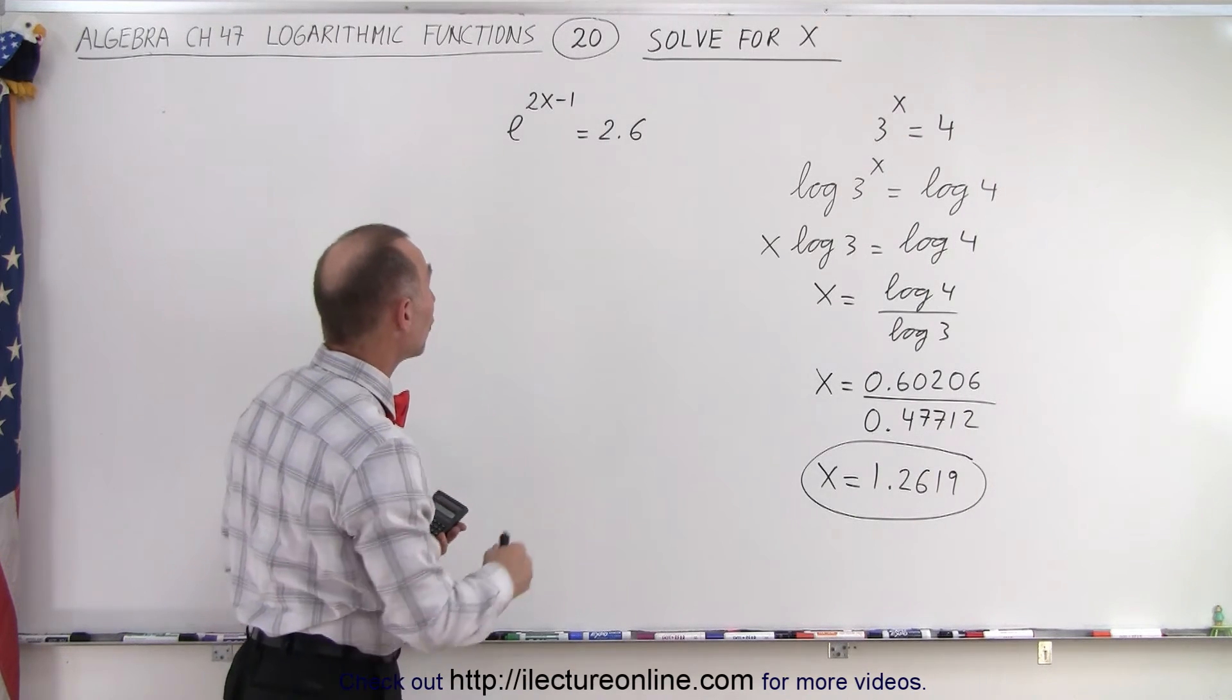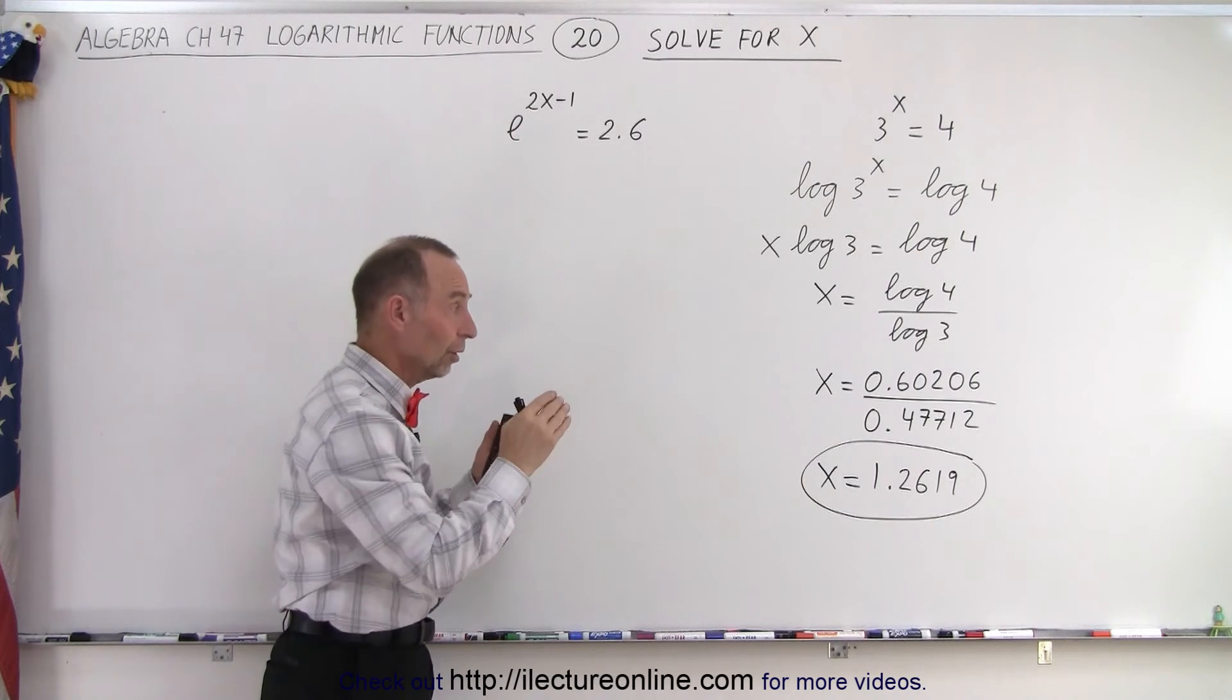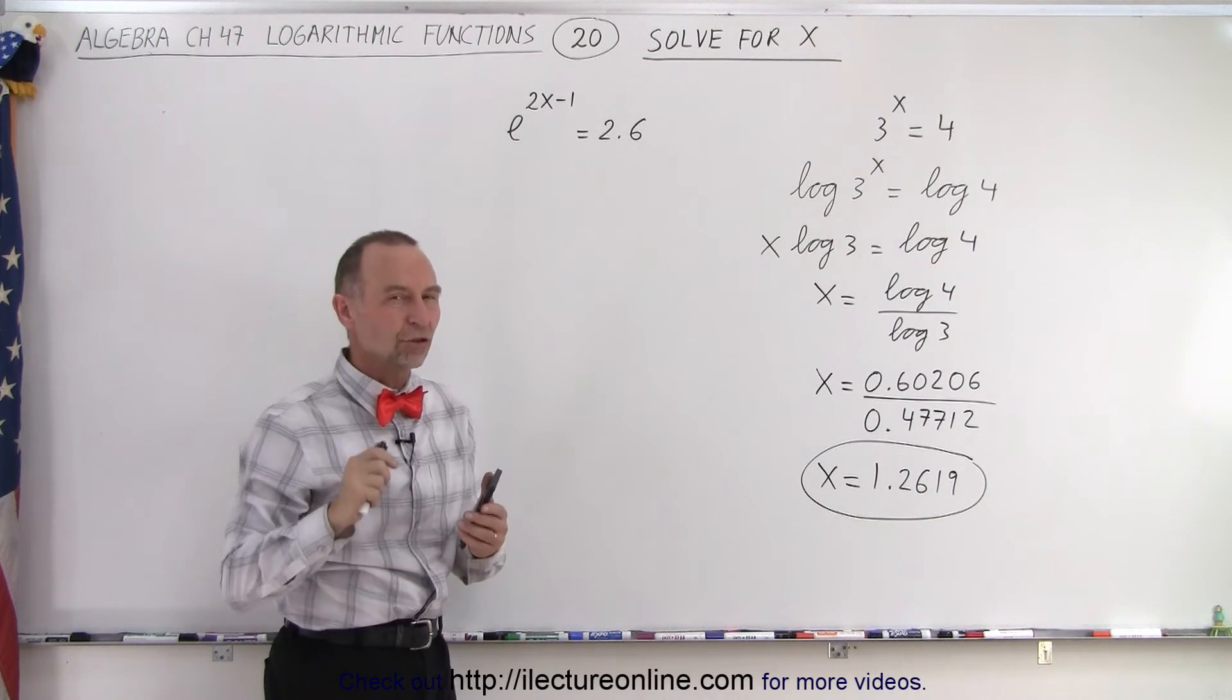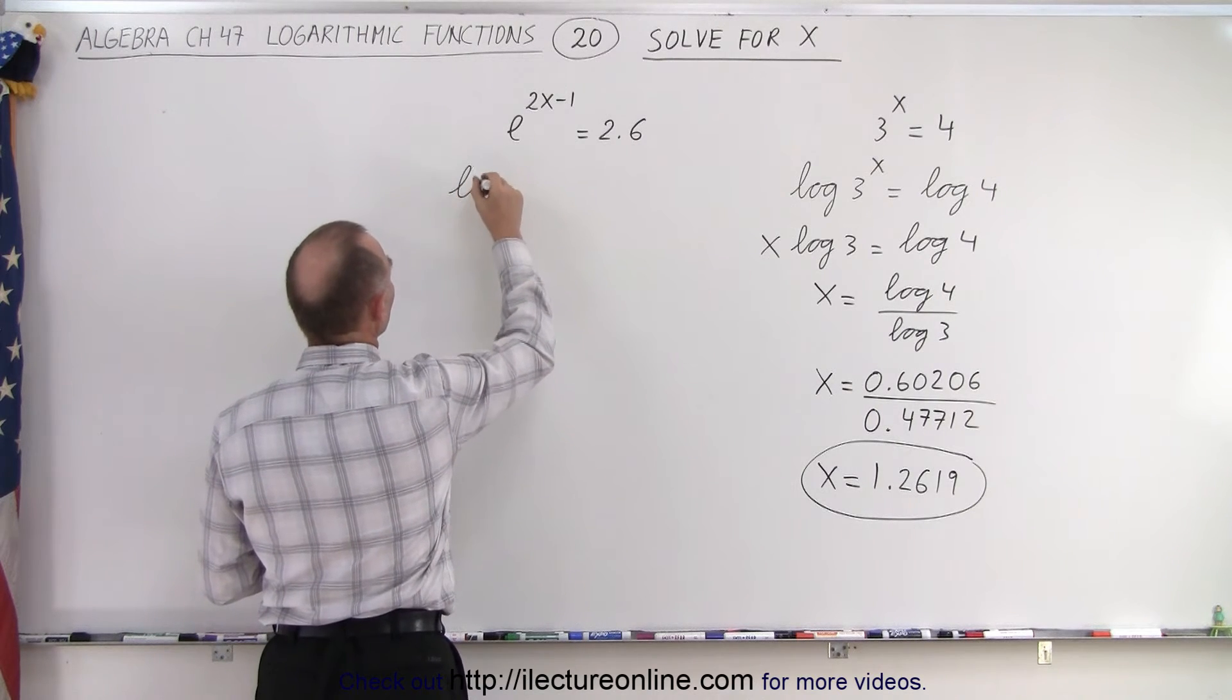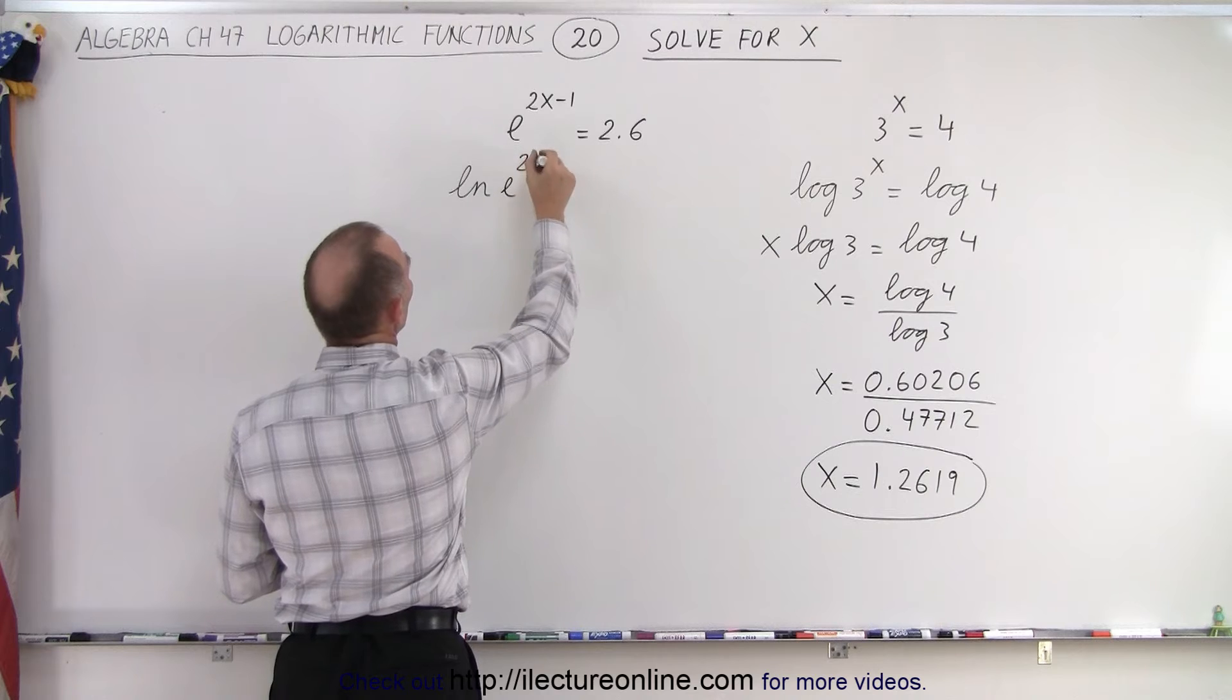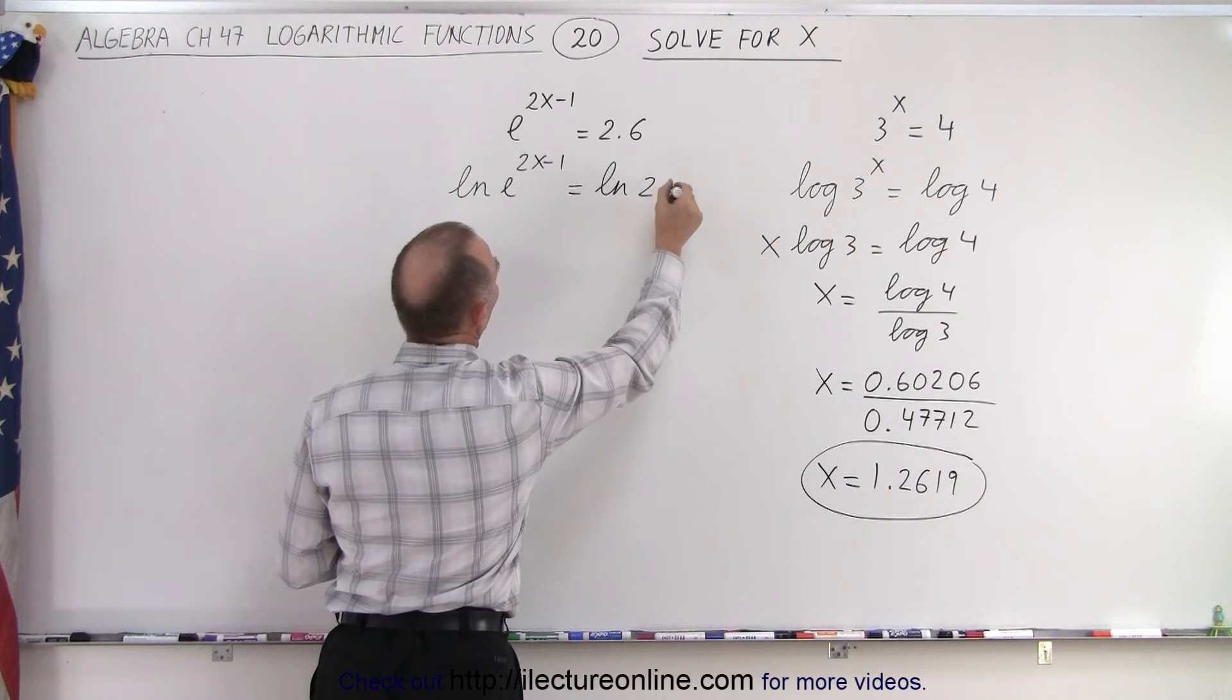On our next example, notice we have e^(2x-1). Instead of using the common log, I'm going to use the natural log of both sides: ln(e^(2x-1)) = ln(2.6).